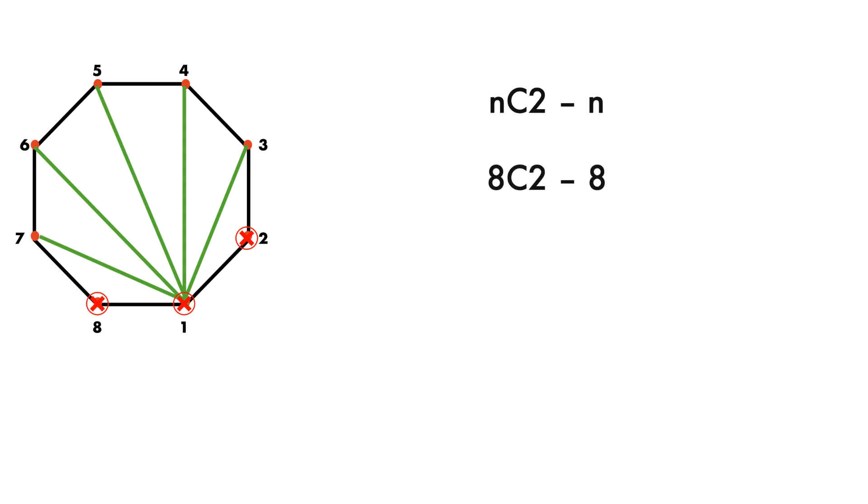So for octagon, n equals 8. Hence, number of diagonals equals 8C2 minus 8. So 8C2 is nothing but 8 times 7 divided by 2 times 1. So after solving this, the expression becomes 28 minus 8, which is equal to 20.